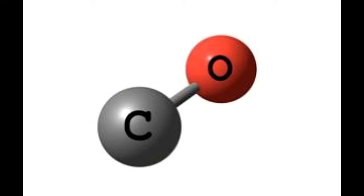In HCl, this is a diatomic molecule in which the hydrogen atom and the chlorine atom are bonded by a covalent bond. Chlorine is more electronegative than hydrogen, so the electrons are pulled towards the chlorine atom, creating a dipole. The bond length of the HCl bond is 0.127 nm.